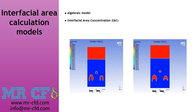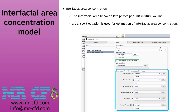In the Eulerian model, the user can select between two approaches for modeling the interface between phases: an algebraic model and a transport-based interfacial area concentration (IAC) model. These models account for mass, momentum, and energy transfer through the interface. Interfacial area concentration is defined as the interfacial area between two phases per unit mixture volume. A transport equation for IAC allows for distribution of bubble diameters and coalescence or breakage effects, enabled under the phases tab.